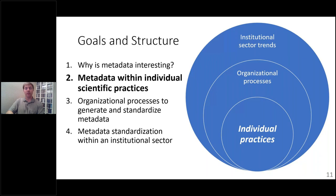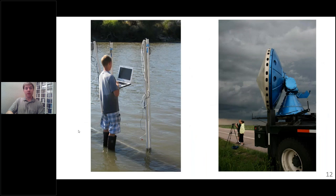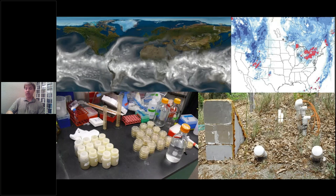Now I'm going to dig into individual practices with some insights from a research project started in graduate school. When I talk about science, for the most part I was looking at people going out in the field — studying water, the air, the oceans, earthquakes. More recently at NCAR, there's a lot of computer modeling of weather and climate, science that happens in labs, and science with automated sensors. Science means a wide range of things, and I think a lot of these characteristics apply to the social sciences as well.